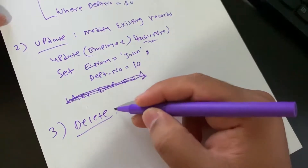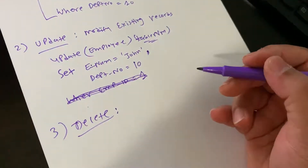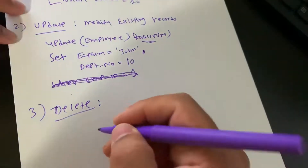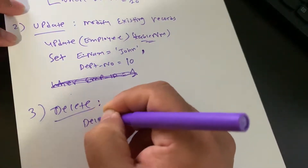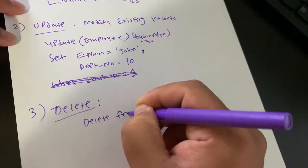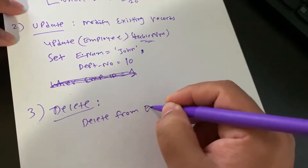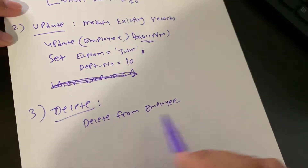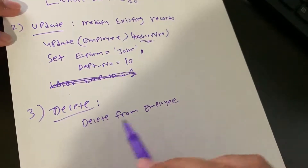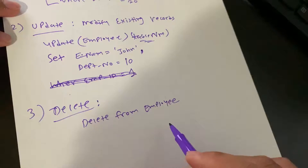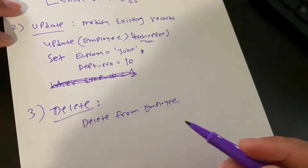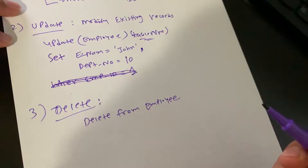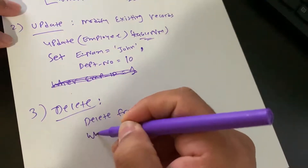Now let's look at the third statement, which is DELETE. DELETE removes records from an existing table. Here is the syntax: DELETE FROM table_name — for example, DELETE FROM employee. If you run it as-is, it will delete the entire table. Most of the time you need some kind of criteria because you want to delete only particular records.